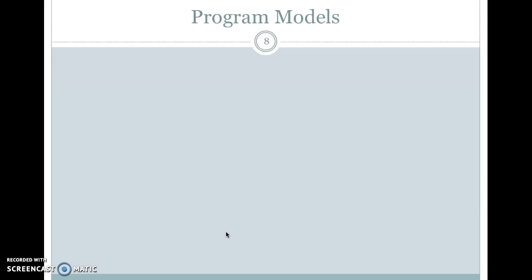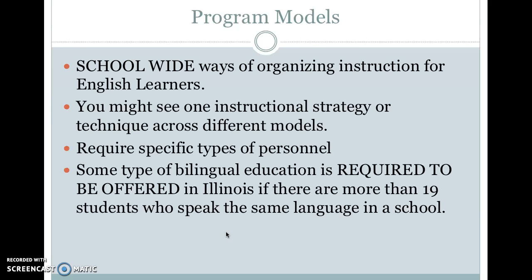Now I'd like to spend more time talking about the different program models. When we talk about program models, we are talking about school-wide ways of organizing instruction for English learners — not necessarily one particular strategy, but how the school is structured. Different models require specific types of personnel. In Illinois, the rule is that bilingual education is required to be offered if there are more than 19 students who speak the same language in a school. So if you have 20 Polish-speaking students in a middle school, you're supposed to have a bilingual teacher. If you have 18 Polish-speaking and 18 Urdu-speaking students, you are not required to offer bilingual education, but you would offer some kind of ESL support.